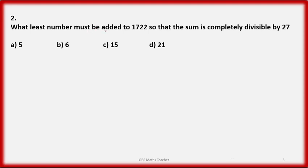Next question: what least number must be added to 1722 so that the sum is completely divisible by 27? Options are 5, 6, 15, and 21. Remember, the number should be the least number.